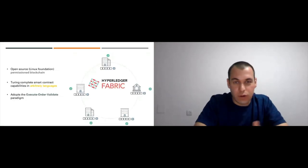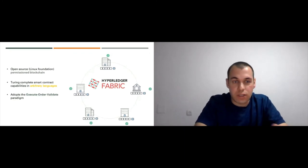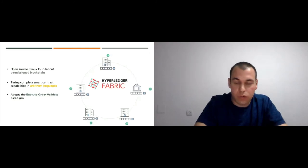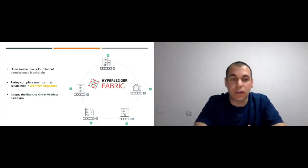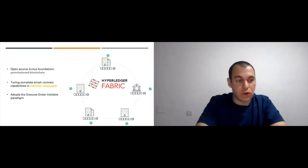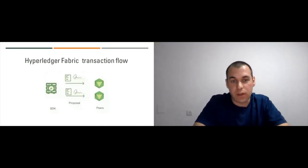Hyperledger Fabric is a permissioned blockchain platform under the Linux Foundation. It has Turing-complete smart contracts — you can write them in basically any supported language like Go, JavaScript, or Java. One of the things that differentiates Fabric from other blockchains is its unique architecture: the execute-order-validate paradigm.